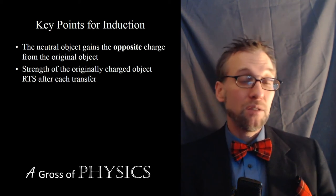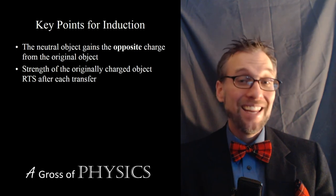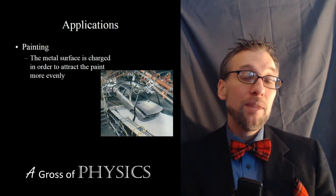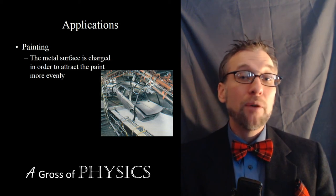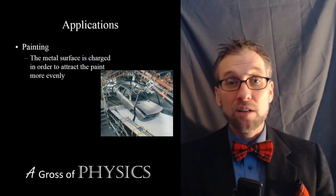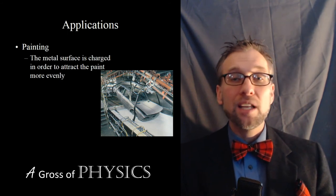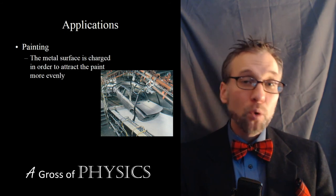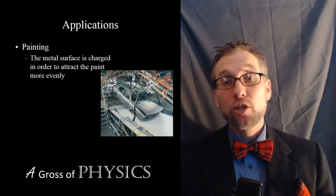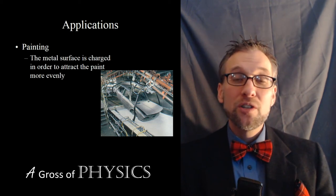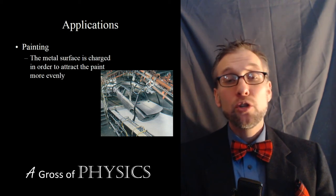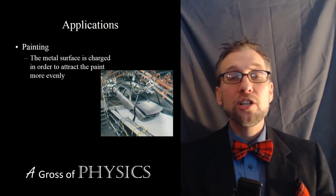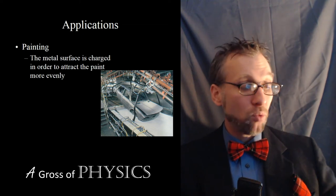Those are the three different methods of charging: friction, conduction, and induction. Static electricity has many uses. Some applications in industry include allowing paint to adhere to the frames of vehicles — vehicles or tractors that are spray painted will often be charged, and then the paint or paint vat will be charged the opposite charge. Those charged paint molecules are attracted to the opposite charge of the chassis or metal pieces of whatever you're trying to paint. Charging objects and using it to paint objects is one way that we use static electricity.